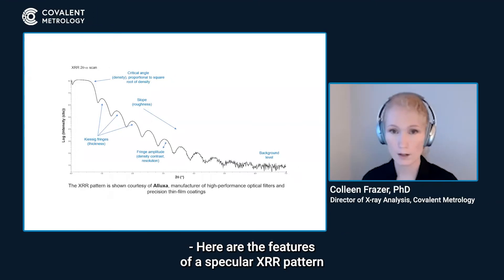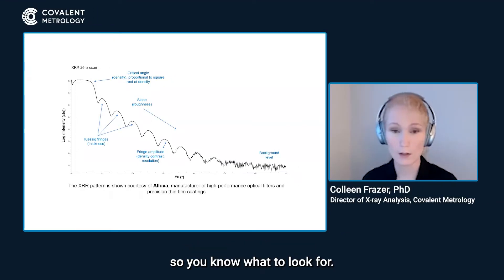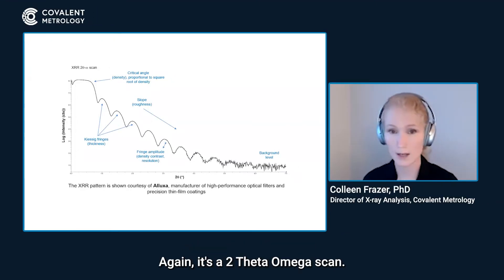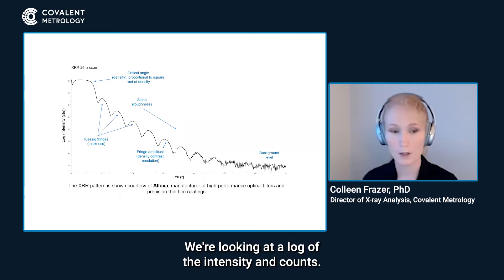Here are the features of a specular XRR pattern, so you know what to look for. Again, it's a 2-theta omega scan. Our x-axis is 2-theta, and we're looking at a log of the intensity and count.